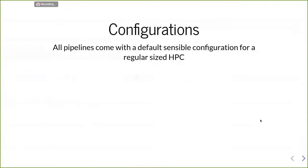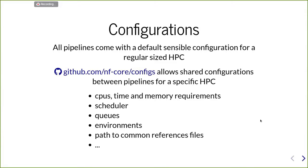One thing that is also very important is the configuration. We try to provide all pipelines with a default sensible configuration for a regular-size cluster. But of course, you need to specify which scheduler you're using and related settings. To help people from the same institute share pipelines, we provide a GitHub repository that is checked when you launch a pipeline, allowing configuration to be shared between pipelines for a specific HPC. So if someone at an institute configures an NF-Core pipeline correctly — with the right CPU, time and memory requirements, scheduler, queue, and paths to common reference files — anyone else from the same institute will be able to run any other NF-Core pipeline.